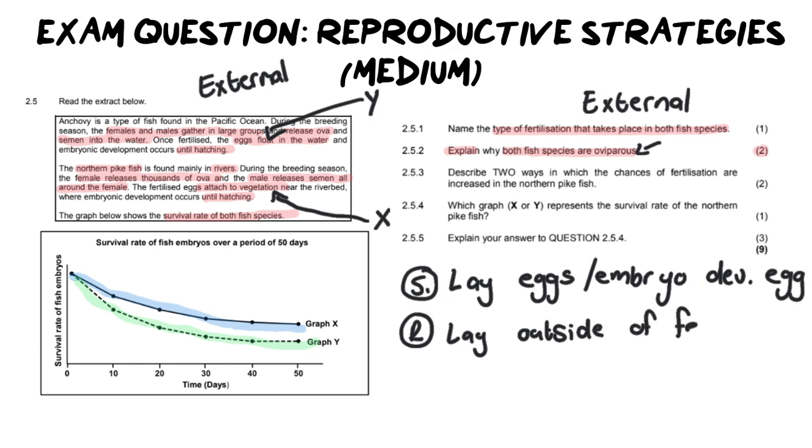Oviparous eggs are laid outside of the female's body. Remember, ovoviviparity is when you have eggs that stay inside the female. So first statement, they lay eggs, or they have embryos that develop in an egg, and that is laid, or they lay those eggs outside of the female body.